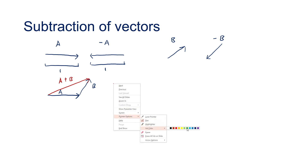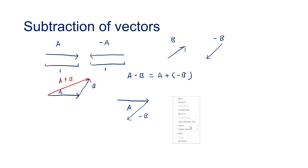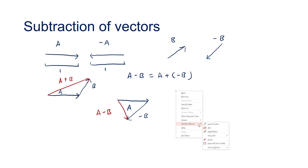What if we want to find a minus b, which is the subtraction? To begin with, we draw vector a as usual, and then we draw negative b — which is just b pointing in the opposite direction. So this expression a minus b is just a plus negative b. The resultant vector is something like this — this is a minus b.